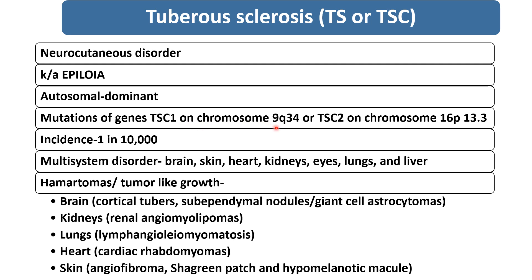TSC1 is on chromosome 9 and TSC2 is on chromosome 16. Incidence is 1 in 10,000. It is a multi-system disorder involving the brain, skin, heart, kidney, eyes, lung, and liver.